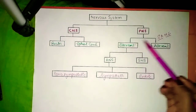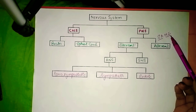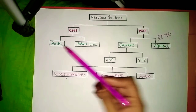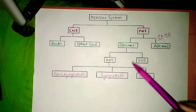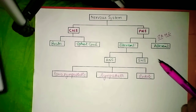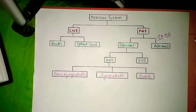Efferent or motor neurons transmit signals away from the brain to other areas to stimulate the effector organs such as skin or muscle to perform a function or reflex.